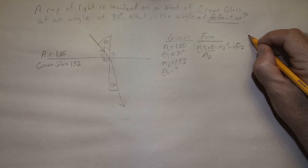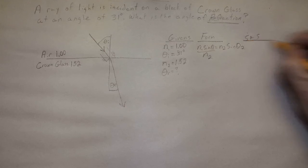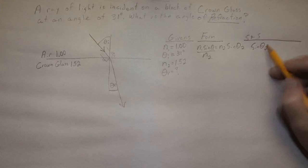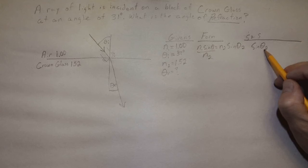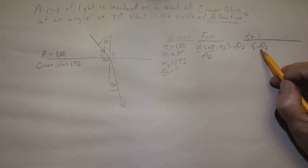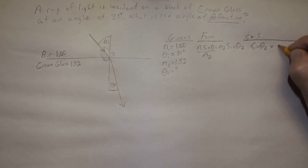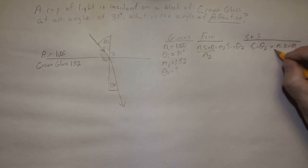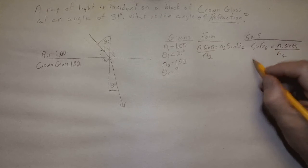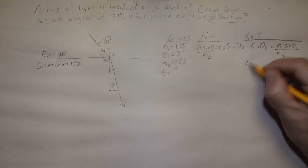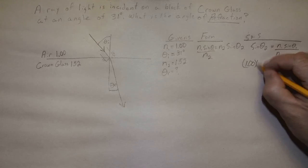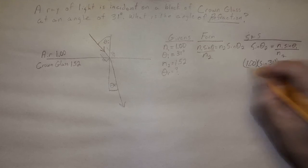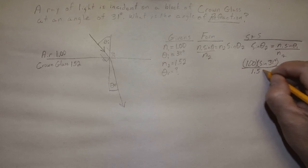Rewriting, we have sine of theta 2. Now remember this is not the angle, this is the sine of the angle. So to find that we're going to have to take the inverse sine on the calculator. But that all equals N1 sine theta 1 over N2. So let's go ahead and put the numbers in here. That's 1.00 times the sine of 31 degrees divided by 1.52. So you can see this is really quite a simple problem.